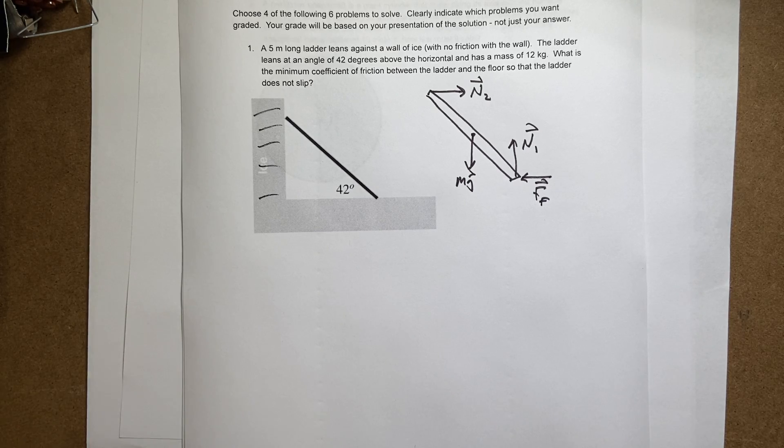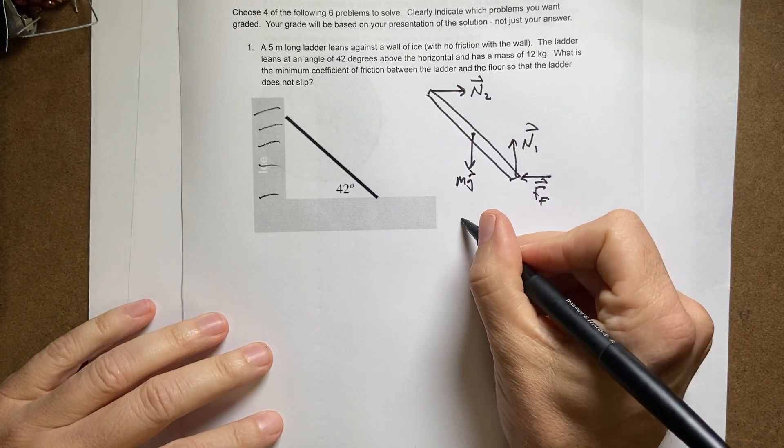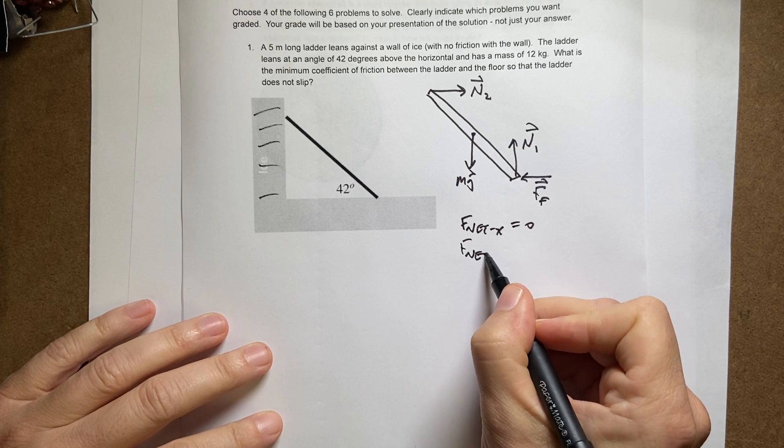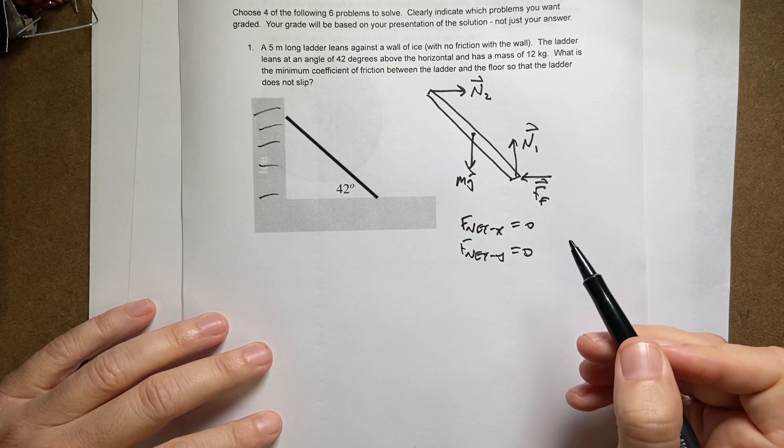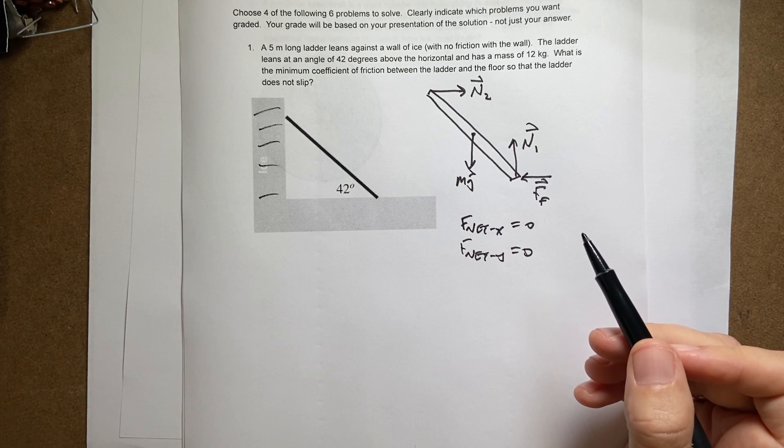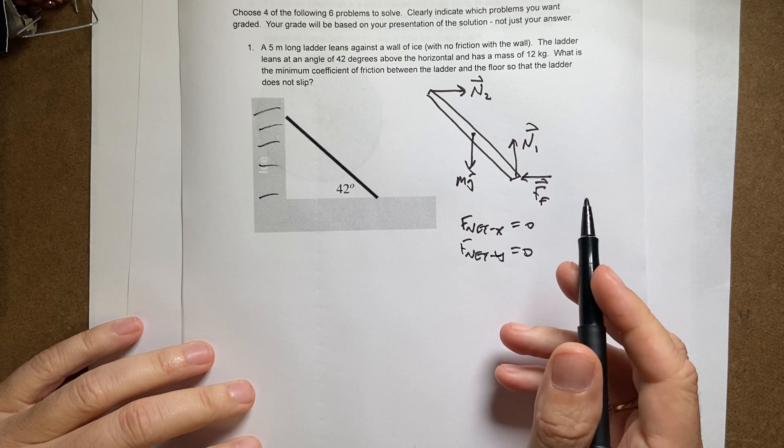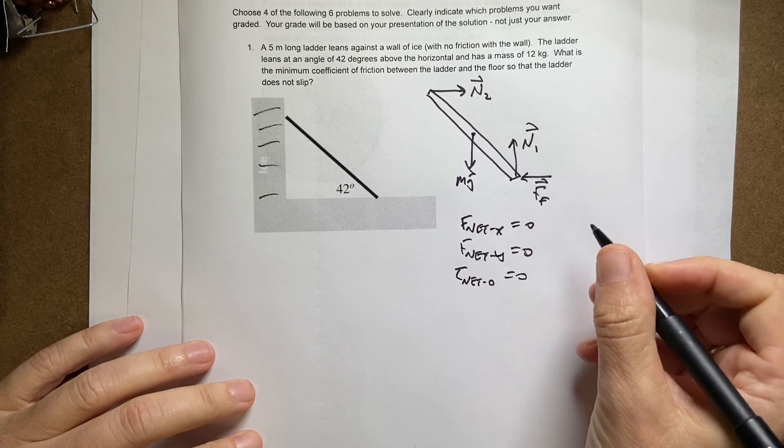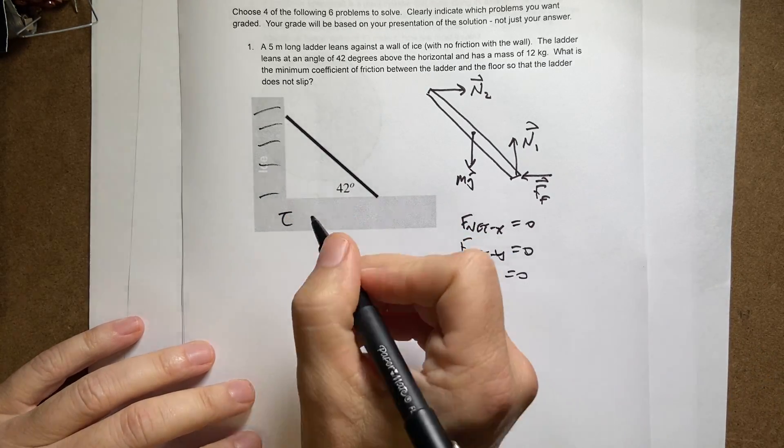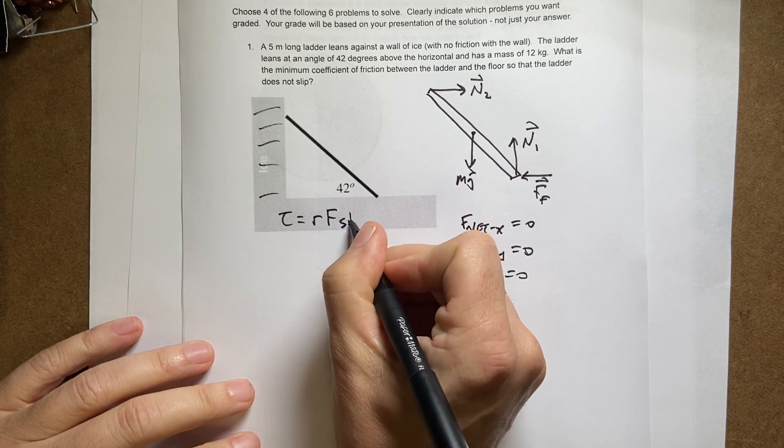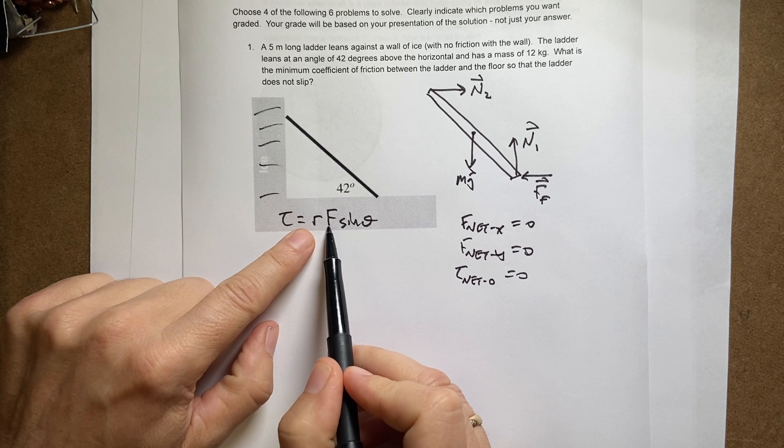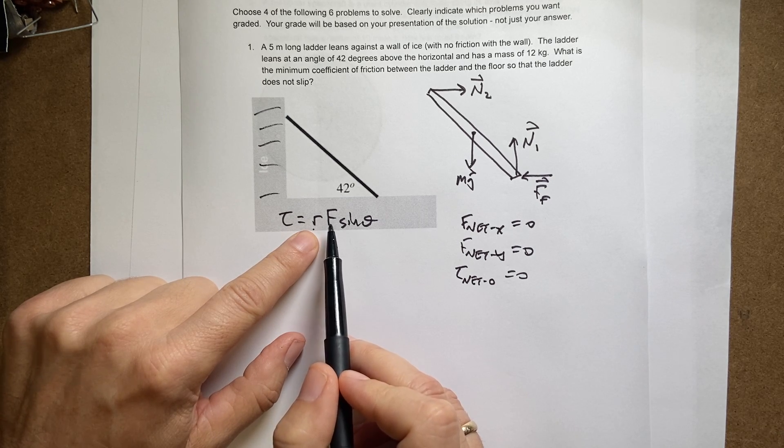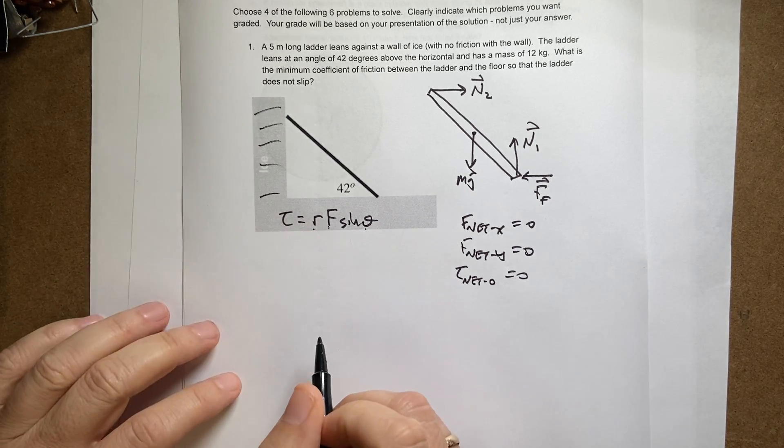So if that ladder is in equilibrium, the following three things are true. Number one, F net X equals zero. Number two, F net Y equals zero. So the net force in the X and the Y direction has to be mass and acceleration. But if it's in equilibrium, the acceleration is zero. And then finally, the net torque about some point, torque net O equals zero. Where torque as a scalar would be R F sine theta. So this is the force applied. This is the distance from the point to calculate the torque about to the force. And this is the angle between F and R.